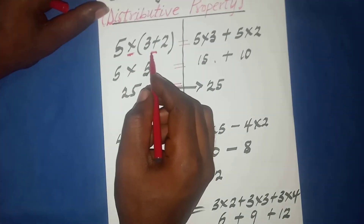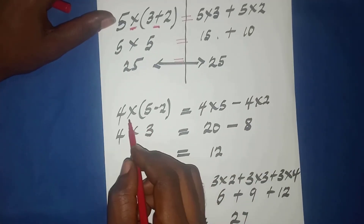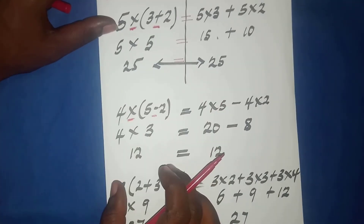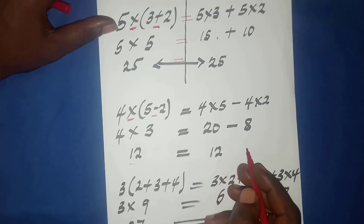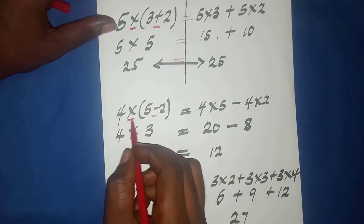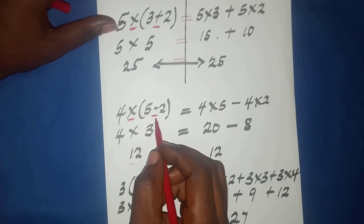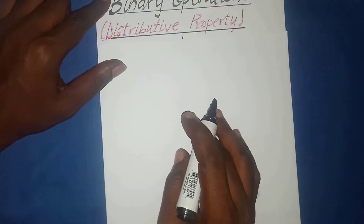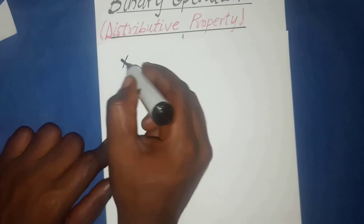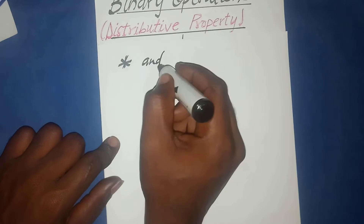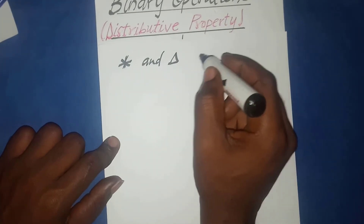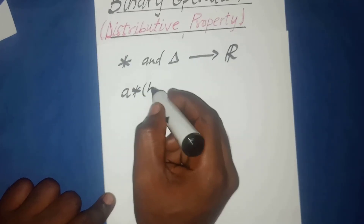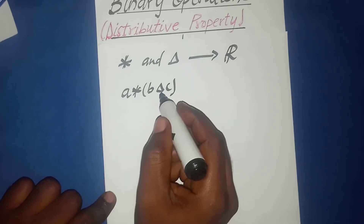In the second case, we had multiplication and subtraction. Using both methods we got twelve. So we can conclude that multiplication is distributive over subtraction. In general, if we have two closed binary operations — let's call them star and triangle — defined over the set of real numbers such that a star (b triangle c) equals (a star b) triangle (a star c) for all a, b, c in the set, then the operation star is distributive over the operation triangle.